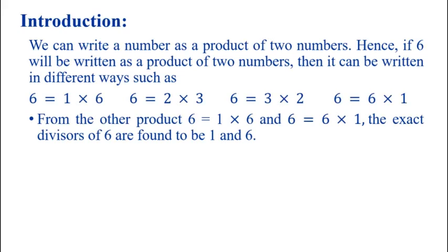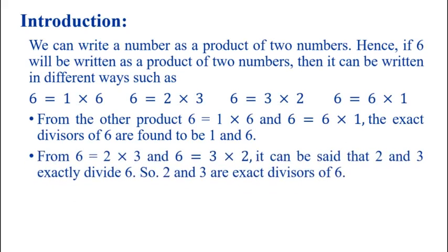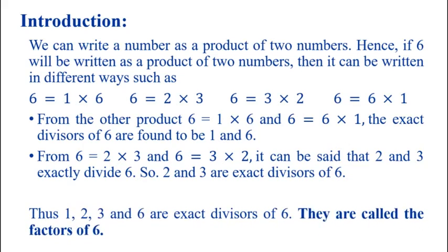From the products 6 = 1×6 and 6 = 6×1, the exact divisors of 6 are found to be 1 and 6. From 6 = 2×3 and 6 = 3×2, it can be said that 2 and 3 exactly divide 6, so 2 and 3 are exact divisors of 6. Therefore, 1, 2, 3 and 6 are exact divisors of 6, and they are called the factors of 6. So the factors of 6 are 1, 2, 3 and 6.